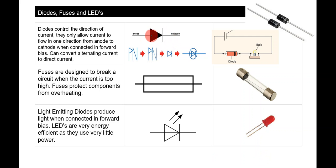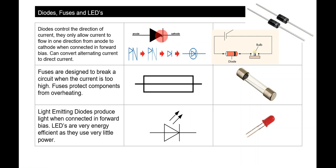Diodes control the direction of current — they only allow electricity to flow in one direction and can convert alternating current into direct current. Direct current flows in one direction; alternating current flows in both directions. A diode acts like a valve, only allowing electricity to flow in one particular direction. It has an anode side — the negative side — and a cathode side — the positive side.